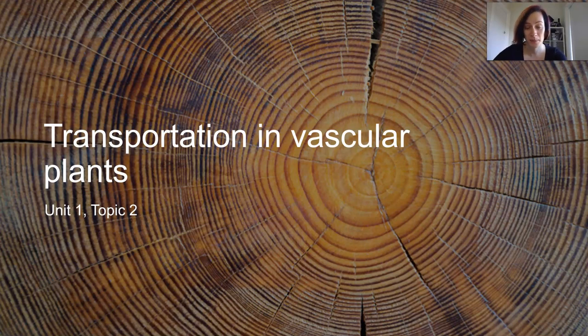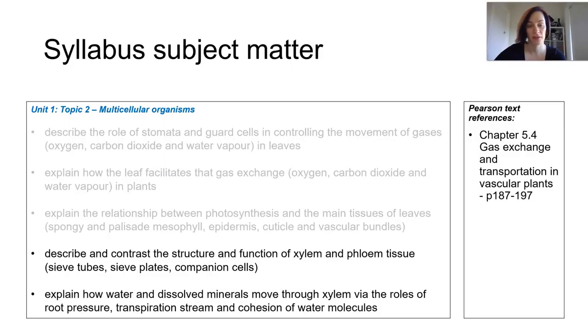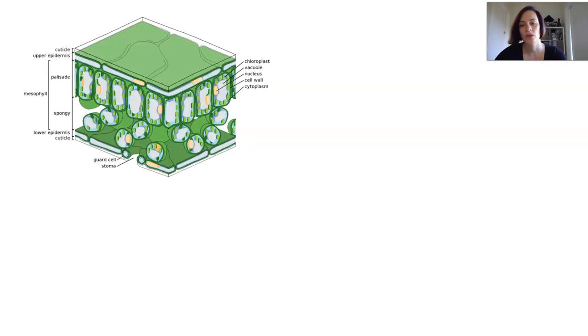In this lesson we're looking specifically at transport in vascular plants. We've covered gas exchange, we're now looking at transportation. We know that autotrophs use light energy to make their own chemical energy via photosynthesis and this process is occurring in the leaves of the chloroplast. In order for this process to happen in the leaves, all the necessary elements for the chemical reaction actually need to get there first.